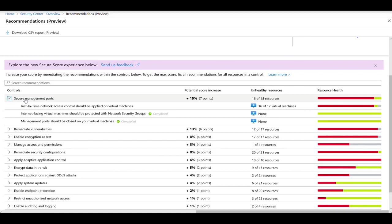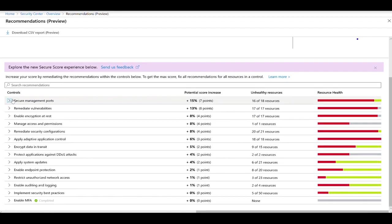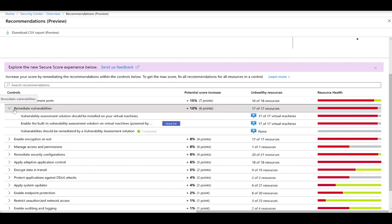In the Security Controls, the way it works is, it aggregates all recommendations that are related to the specific scenario that you have here. For example, in this case, Secure Management Port. There are multiple recommendations for this particular scenario. You want to address every single recommendation in order to gain that 15% points in your Secure Score. As you go over each one of those Security Controls, you may see that some of those recommendations also have the quick fix, which will enable you to quickly remediate that recommendation.